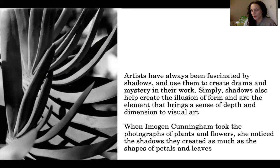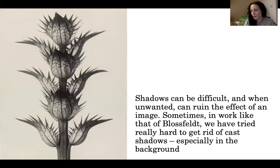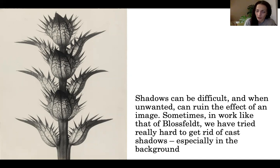We've seen lots of examples of her very zoomed-in work, and you've made some photographs yourselves that are very similar. Likewise, when we looked at Blossfeld, you went and made your own versions, and for his work what we discovered is we had to try and get rid of a background shadow altogether. We learned lots of tips, techniques and tricks on how to do that, because shadows can be difficult, and when they're unwanted they can actually ruin the effect of an image. So in work like Blossfeld's, we tried so hard to get rid of that background shadow so that we could really focus on what's in the foreground.